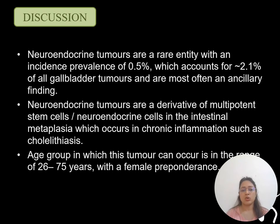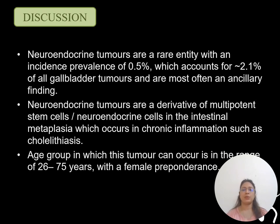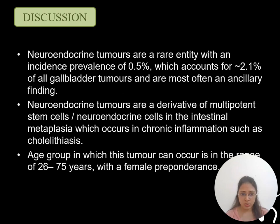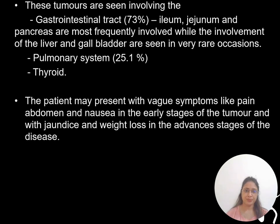Discussion. As already discussed, neuroendocrine tumors are a rare entity accounting for only 0.5%, of which gallbladder tumors account for only 2.1%. Neuroendocrine tumors are a derivative of multi-potent stem cells and neuroendocrine cells in intestinal metaplasia, which occurs in chronic inflammation such as cholelithiasis, and commonly occur in an age group of 27 to 75 years with a female predominance. Most commonly they involve the gastrointestinal tract — ileum, jejunum, and pancreas — while liver and gallbladder are rarely involved, and they may also involve the pulmonary system and thyroid.